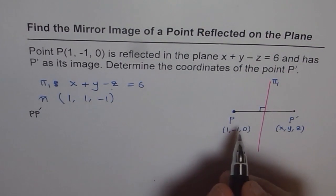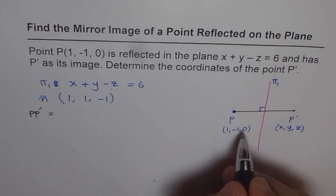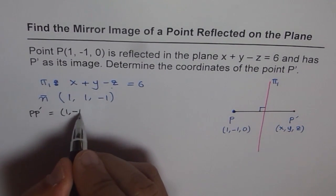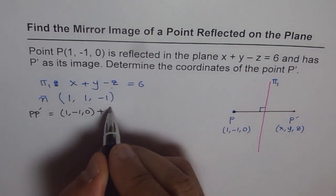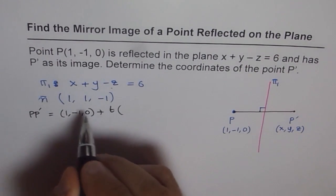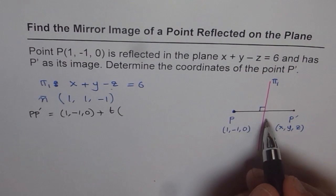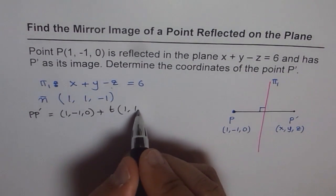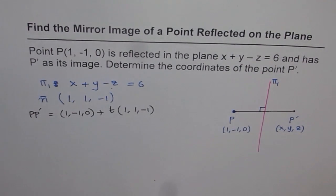The line equation for PP dash is: starting from point (1, -1, 0) plus t times the direction vector. The normal to the plane gives the direction along this line as (1, 1, -1).